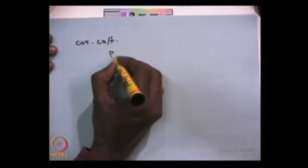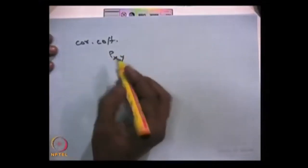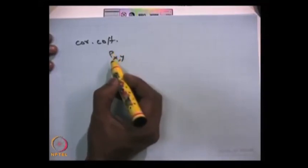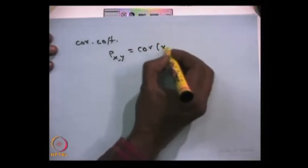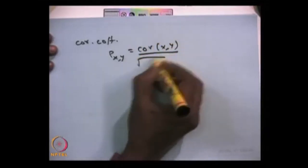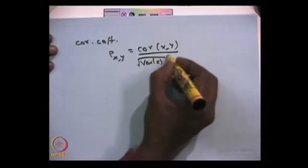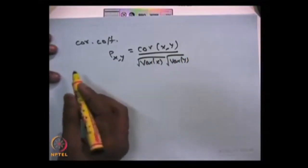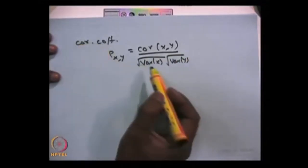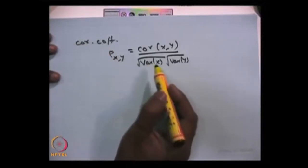Now we are going to define another measure: the correlation coefficient, denoted by rho(X, Y). This is the covariance of X, Y divided by the square root of the variance of X times the square root of the variance of Y. To have the correlation coefficient exist, the random variable should have at least a second order moment.